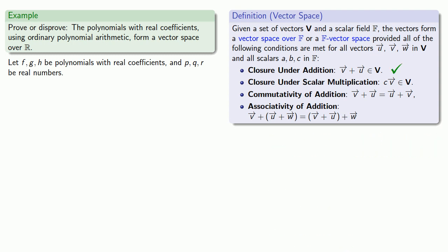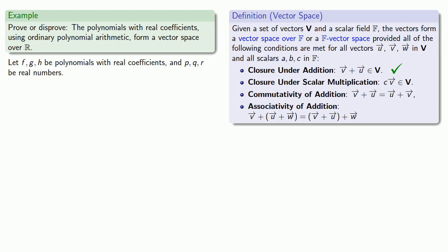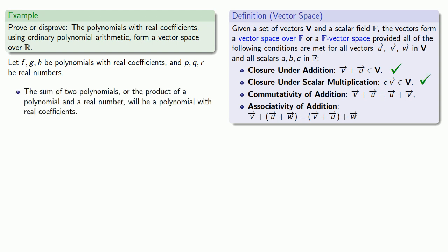Next, if we take a scalar drawn from the real numbers and multiply it by one of our vectors — a polynomial with real coefficients — do we get a polynomial with real coefficients? Yes, so we pass the second requirement. For commutativity, if I take two polynomials with real coefficients, it doesn't make a difference which order I add them, so addition is commutative.